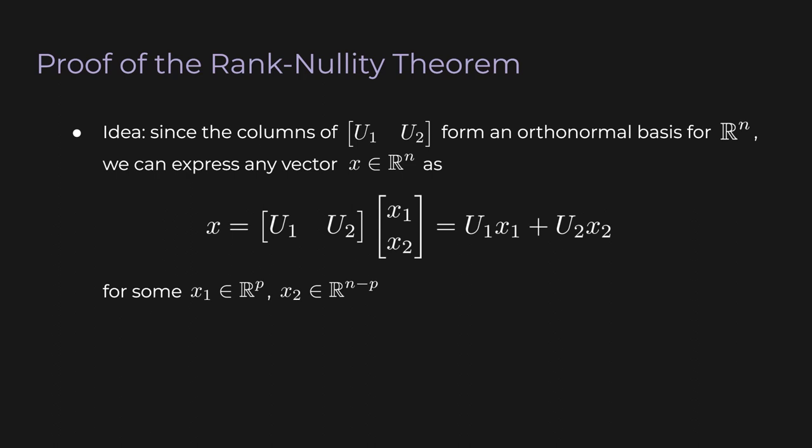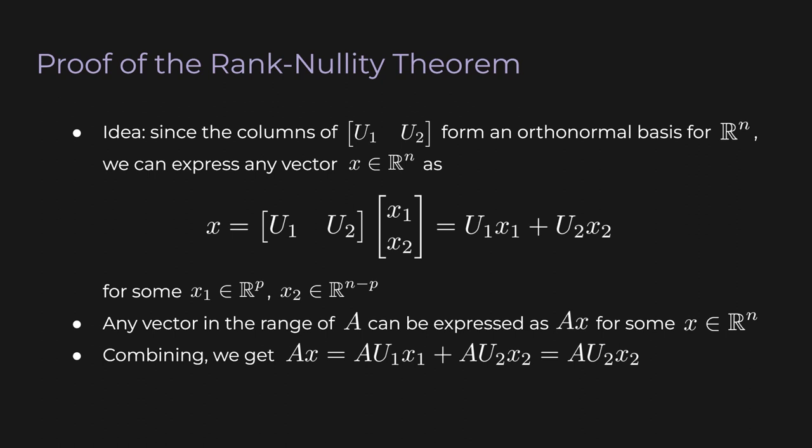Now, this result is the key to finding the rank of A and finishing the proof. Think about this. Any vector in the range of A can be expressed as AX for some X in Rn. So combining this with our idea above, we get AX equals AU1 X1 plus AU2 X2, which in turn just equals AU2 X2. What happened to the AU1 X1 term? Well, remember that the columns of U1 form an orthonormal basis for the null space of A. So AU1 equals a matrix full of zeros.